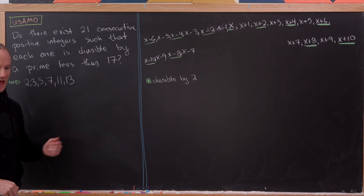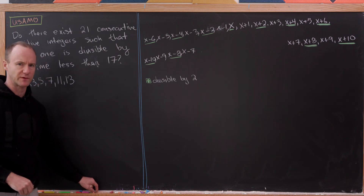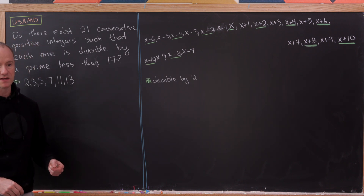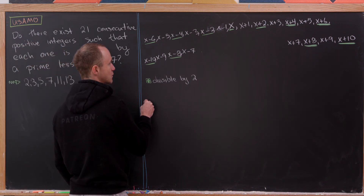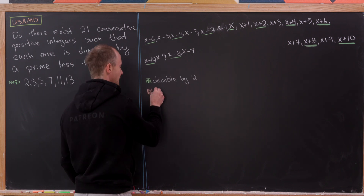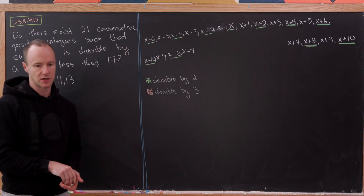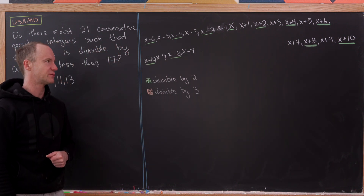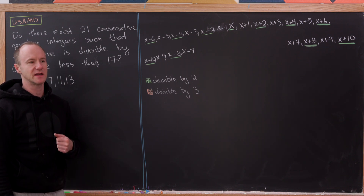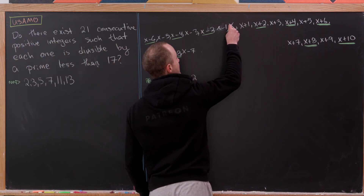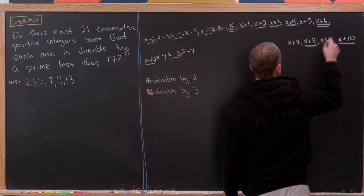Now we've just got to argue that x plus an odd number is necessarily divisible by one of these primes — or maybe prove that it's impossible. Let's work on multiples of 3, underlining everything divisible by 3 in peach. We don't know where to start since we don't know if x is divisible by 3, so let's assume that x is also divisible by 3. That means x+3, x+6, and x+9 are divisible by 3.